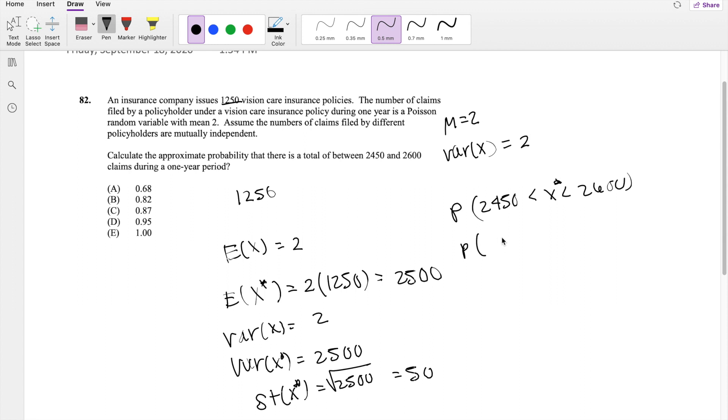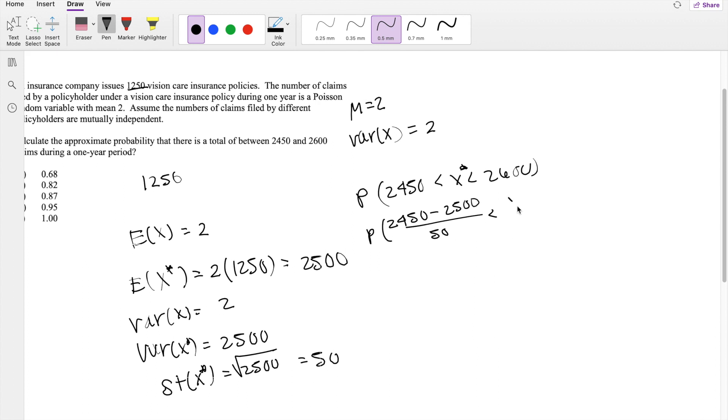So now, normalizing this, we get 2450 minus mean, which is 2500, divided by standard deviation, which is 50, is less than x star, which is just x star minus mean over standard deviation, is less than 2600 minus 2500, divided by standard deviation. This is the definition of z. And on the left-hand side, you get negative 1 is less than z, is less than 2.